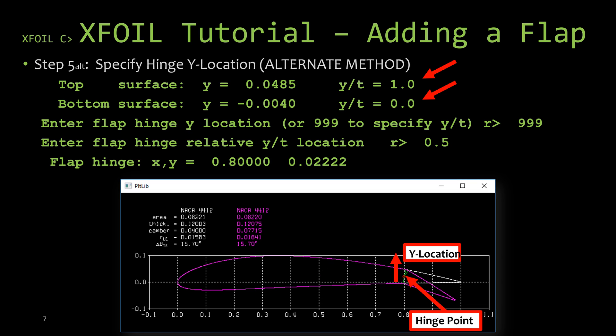If you didn't want to figure out what the actual y-location is like in the previous step, you can actually type in 999 and hit enter as it tells you right there in the command prompt, and it will give you the option to specify the flap hinge location as it's normalized by the thickness of the airfoil. That's just a fancy way of saying that you can just tell it I want it to be at 20%, 50%, or 80% of the thickness of the airfoil. So in our previous example we put it at the midpoint of the thickness, and to do that here we would say that we want it at 50% of the thickness. So we would type in 0.5 and hit enter, and after you finish specifying the x and y coordinate points of the hinge point, XFOIL will show you the values that you chose.